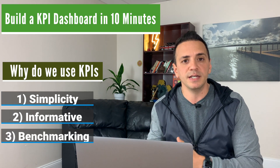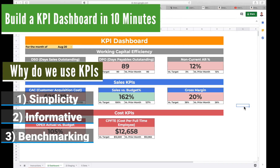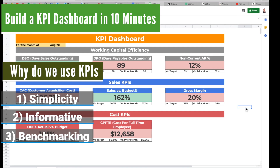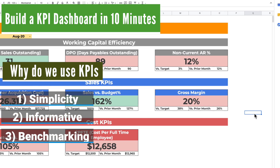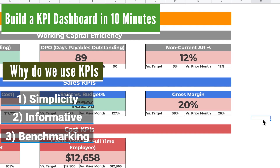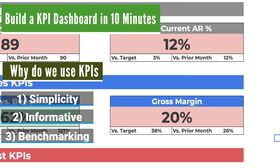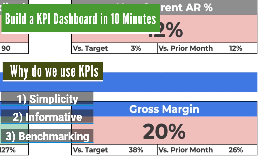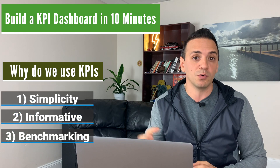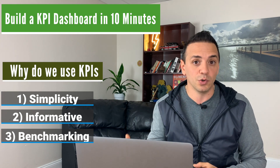The third reason we use KPIs is benchmarking. Benchmarking means that we can compare our performance in the current period to either a prior period or a target. We can also compare our performance to another company, whether in the same industry or a different industry. For example, if we're in food manufacturing and our gross margin is 25%, we can easily compare that to prior periods to see whether we are improving, or compare it to the industry average to figure out whether we're doing as well as we should be.